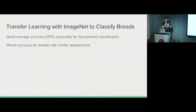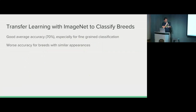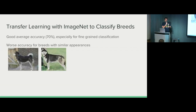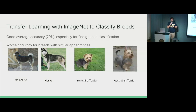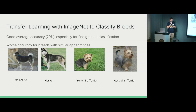In terms of the actual image classifier, there's a good average accuracy, especially for a fine-grained classification problem like this. But there's worse accuracy for breeds with similar appearances. The model can't really tell the difference between these two dogs even though they're different breeds — that's a Malamute and that's a Husky, and I didn't really know either. And then on the left, there's a Yorkshire Terrier and an Australian Terrier. A lot of times it seemed to have to do with either size or something with their tails, which really wasn't obvious from all the images. So that was a problem with just the image classifier.